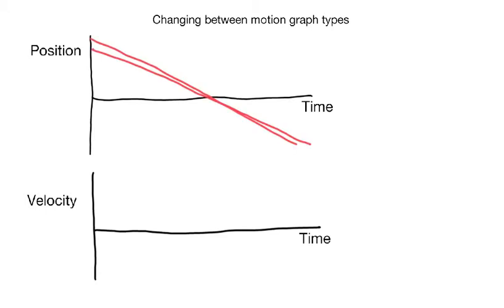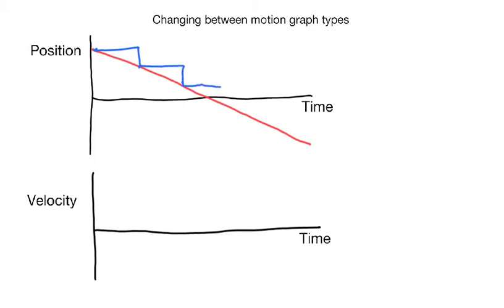Now let's say we have a straight line on the position versus time graph that angles downward. As time goes by, we go down the same amount each increment of time — so we have a consistent velocity, but our position is becoming more and more negative. That means our velocity is a constant negative value. This object is still moving at a constant pace; it's just going in whatever direction we defined to be negative.